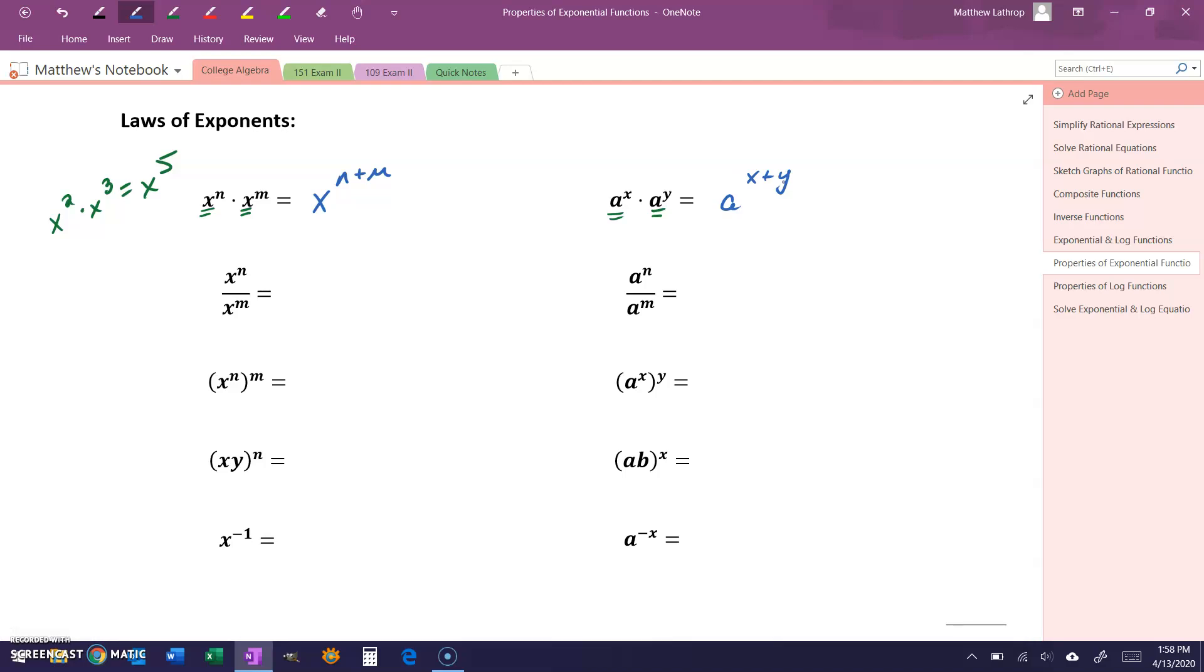If we had the quotient of two power functions, x to the n over x to the m, we can combine that by taking the difference of those two exponents, and that property will carry over similarly to exponential functions. Again, as long as those bases are the same.